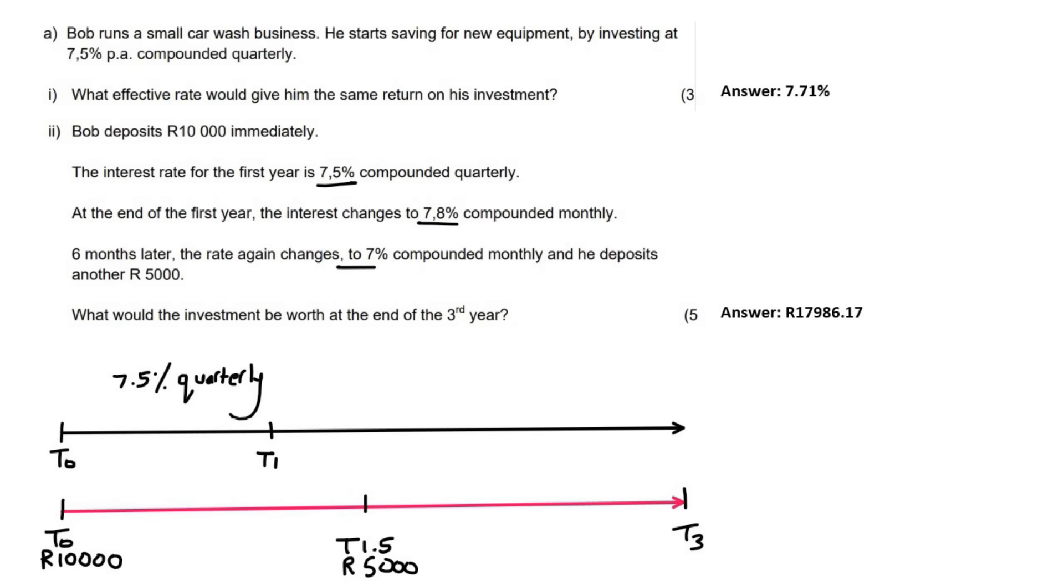The interest rate then changes to 7.8% monthly, but then it changes again after six months. So up to T1.5, so that's for six months over here, the interest rate is 7.8% monthly. So I'm going to say 7.8%, and that is monthly. And then it changes to 7% compounded monthly for the remainder up to T3. So then it's going to be 7% monthly.